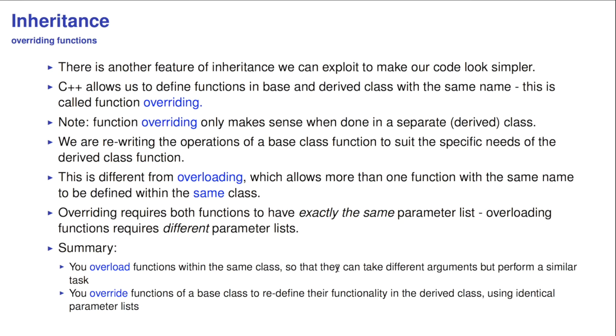Function overriding only makes sense when done in separate derived class. So, what you really are doing, you're rewriting the operation of a base class function to suit the specific needs of the derived class function. That's clearly different from overloading, which allows more than one function with the same name to be defined within the same class. Overriding requires both functions to have exactly the same parameter list. So, there's no difference at all in the way they look, but overloading a function requires different parameter lists. So, you overload functions within the same class so they can take different arguments, perform similar tasks, and you override functions of a base class to redefine their functionality in the derived class using identical parameter lists.